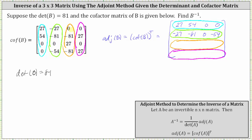The third row is 0, negative 81, 27, negative 81. And the fourth row is 0, 27, 0, 27.